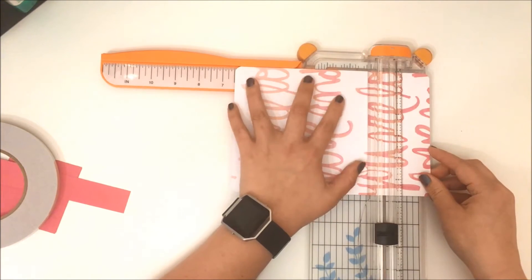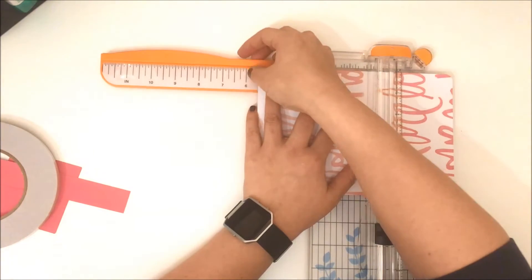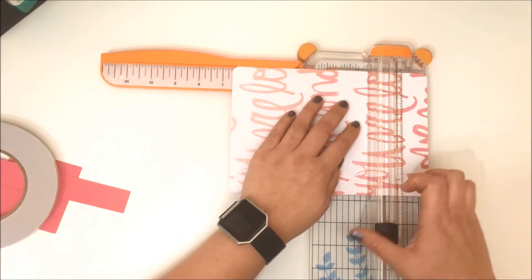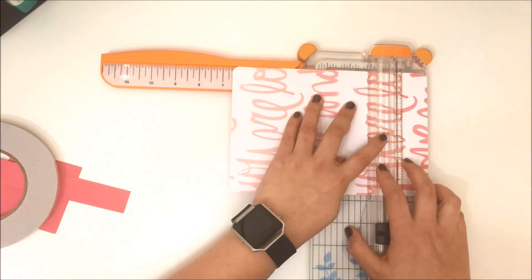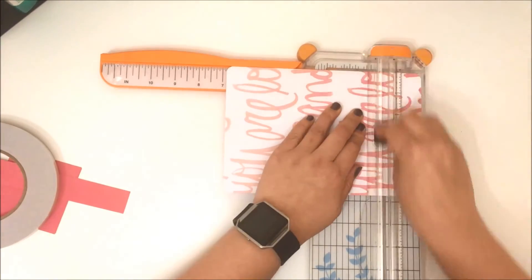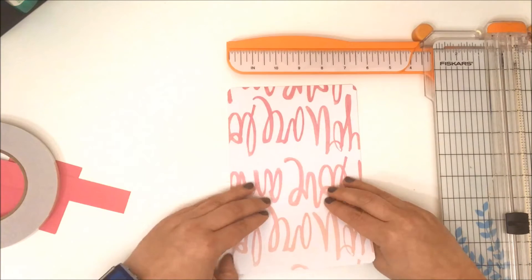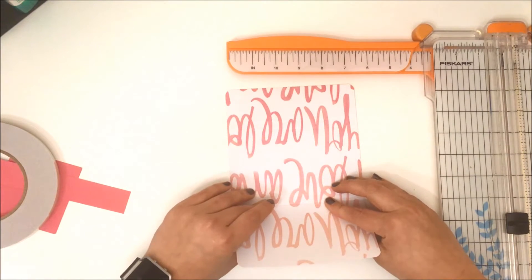The second set of scoring I scored at six and a half inches and six and seven-eighths of an inch. That is for the main part of the wallet.